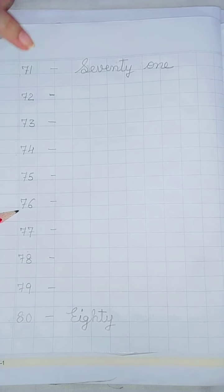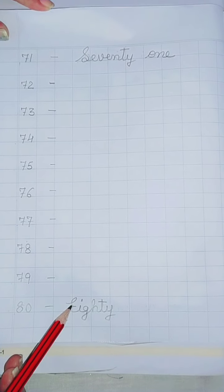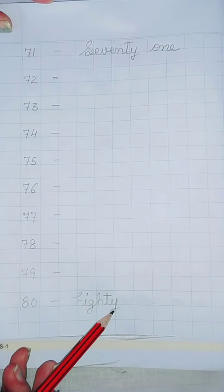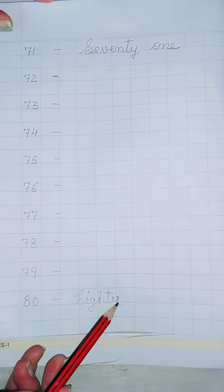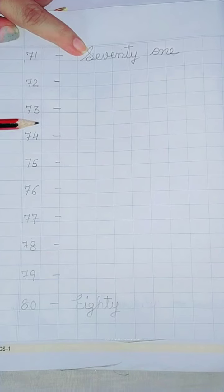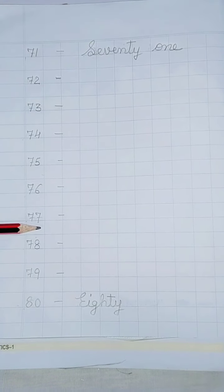76, 77, 78, 79, 80. 80 E-I-G-H-T-Y-80. Write properly touching the line and leave one line after writing each spelling so that the work is neat and correct spellings.